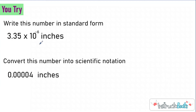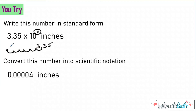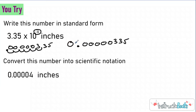Hopefully you just paused it and now you're ready to check your work. For this first one, I'm going to rewrite my significant digits. I know I need to go to the left because it's a negative exponent — six place values: one, two, three, four, five, six. Move my decimal there, and fill in some zeros to help me out. You should have gotten 0.00000335. That is what that number is in standard form.